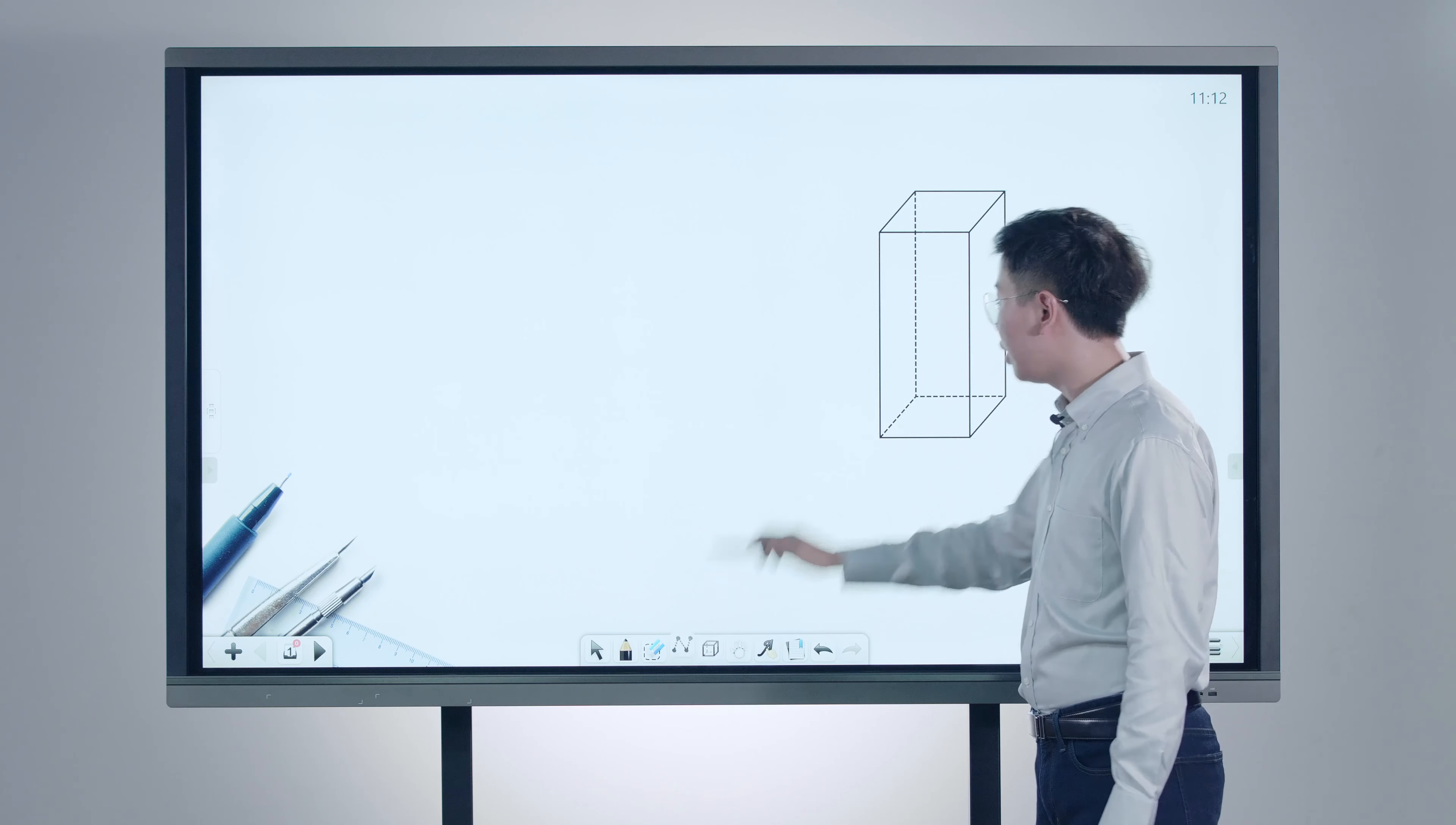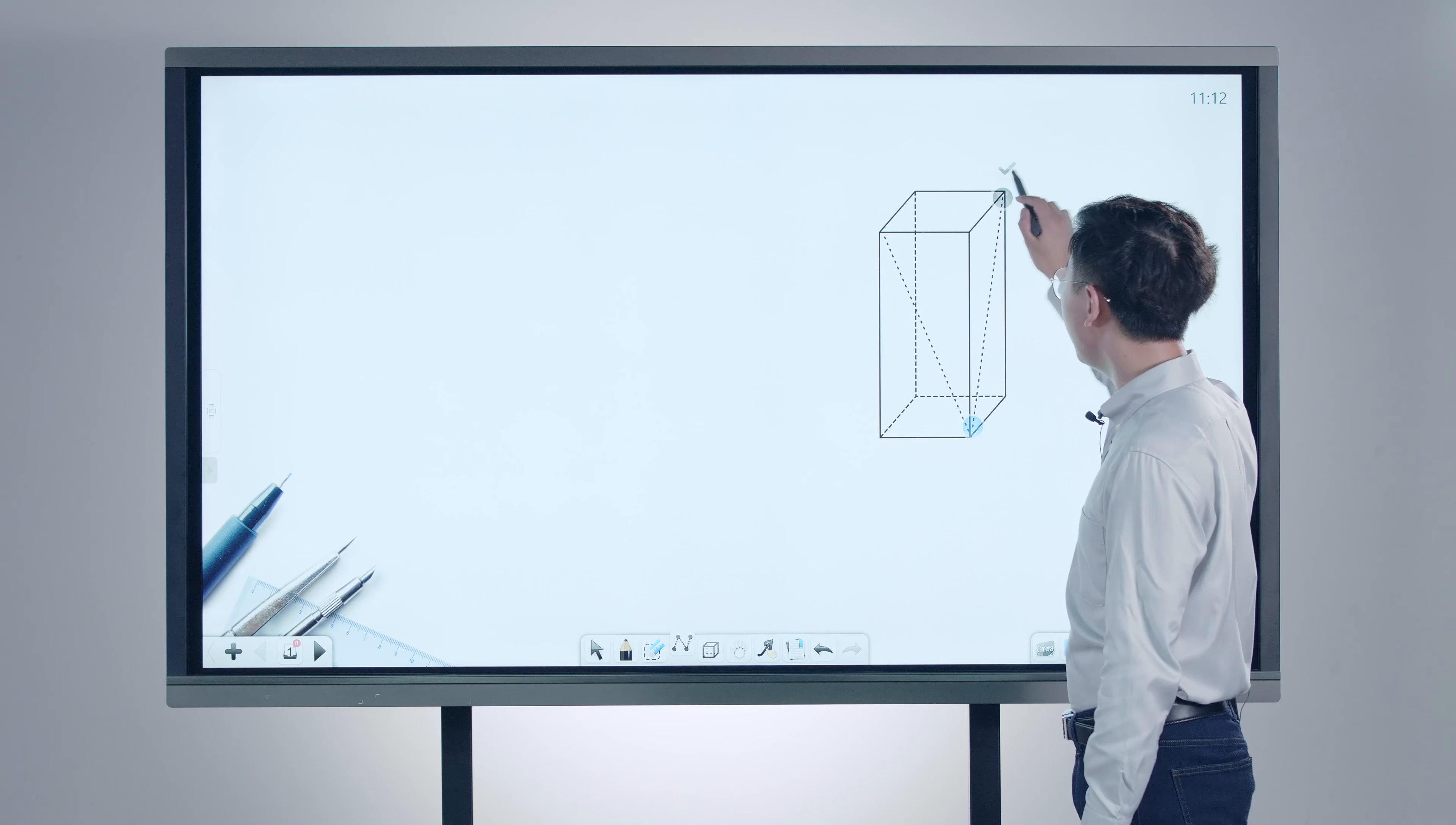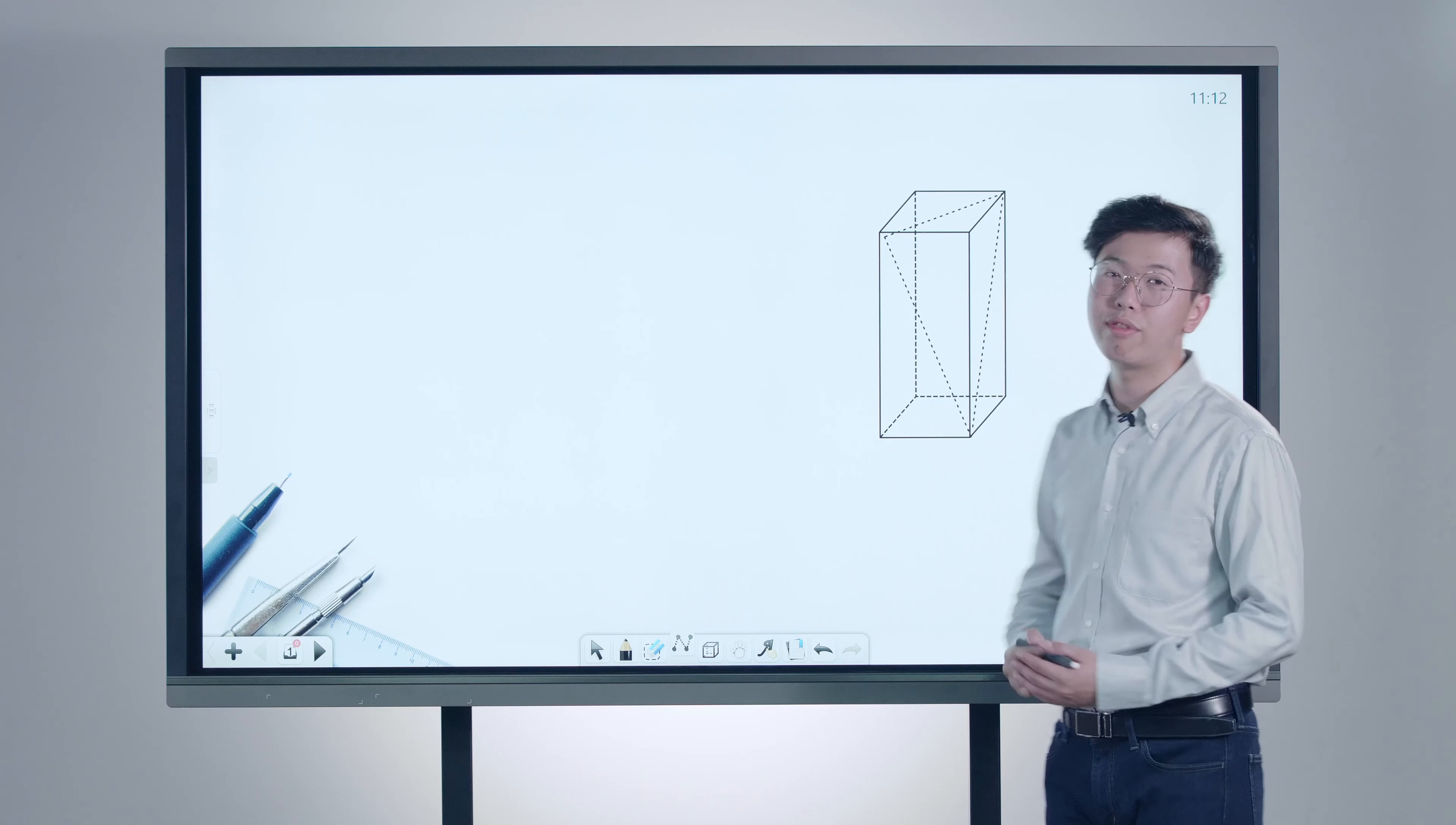And we can easily add in the auxiliary line to explain its inner structure. To analyze 3D figures, it's no longer confusing and frustrating.